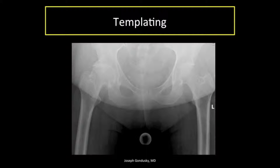I currently template on standard software. I start with the supine low AP pelvis and frog lateral hip x-rays, ensuring appropriate abduction and internal rotation as allowable. I look at the lateral for osteophytes and any abnormal proximal femoral anatomy. On the AP I look at acetabular anatomy including osteophytes, distance to Kohler's line, presence of any osteolytic lesions, as well as any femoral head migration.